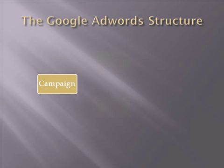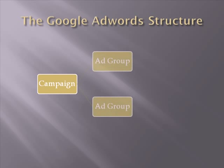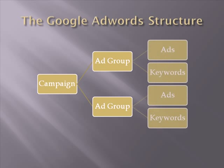In each campaign you can create multiple ad groups. These are groups of ads and keyword combinations for your campaign. Now in each ad group you can set up different ad variations and keywords to trigger them — so this can be a text ad, an image ad, a video ad, or different sets of keywords for example.